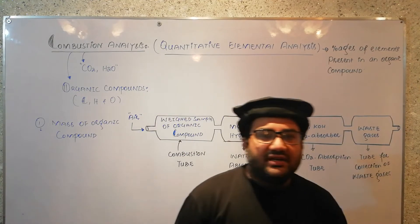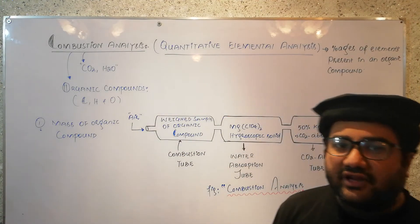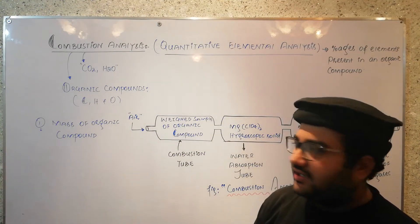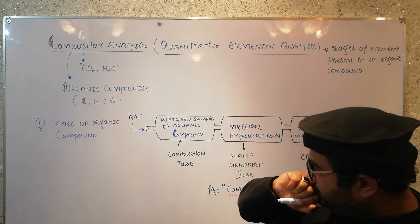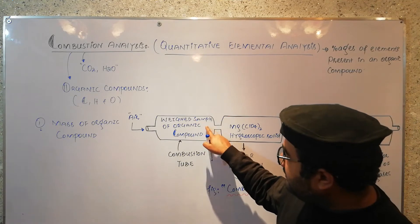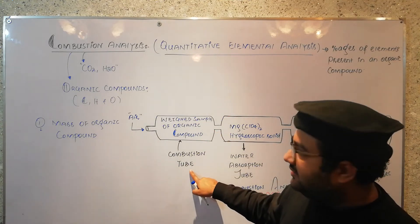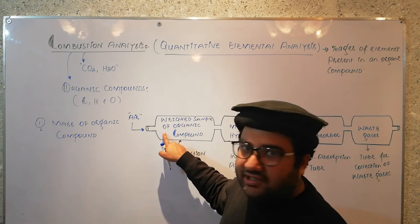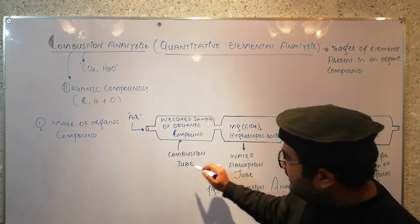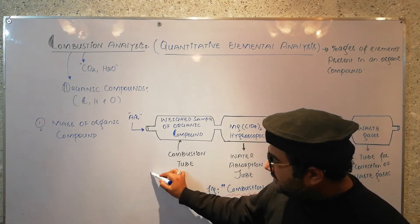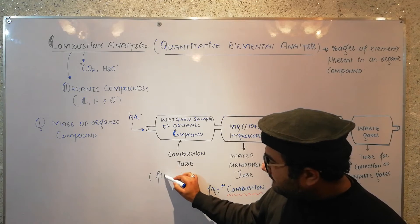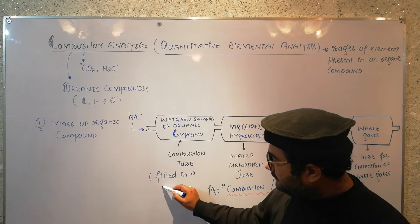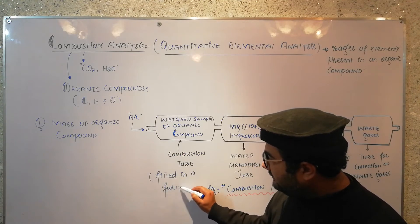When the sample is given to us, first of all we weigh the sample and note down the mass of the organic compound. This weighed sample of the organic compound is placed in a combustion tube, and air is also supplied for the combustion. This combustion tube is further fitted in a furnace.